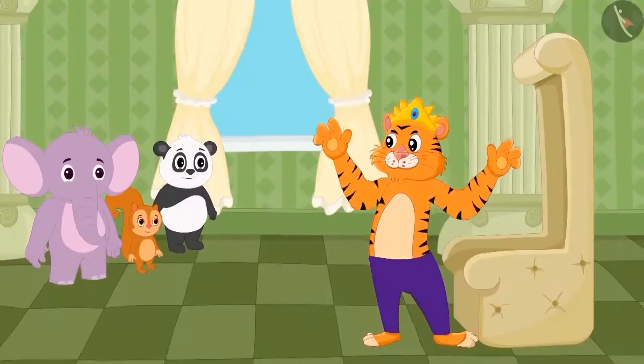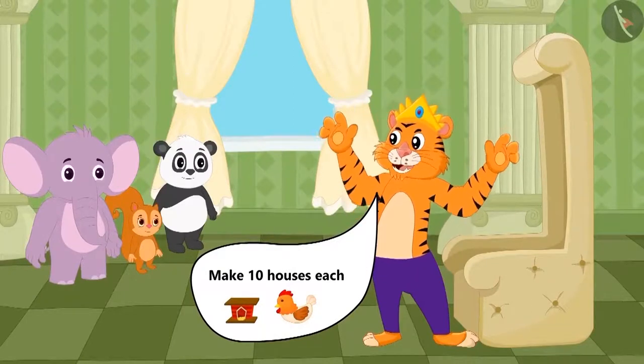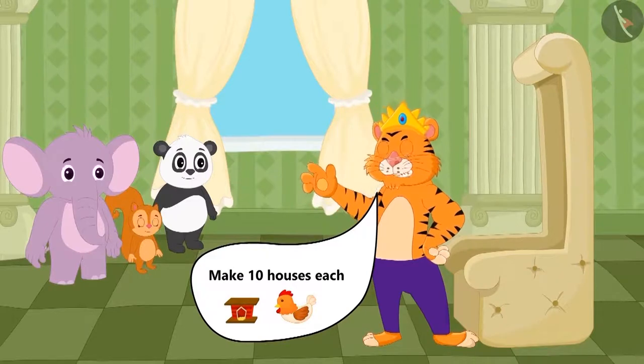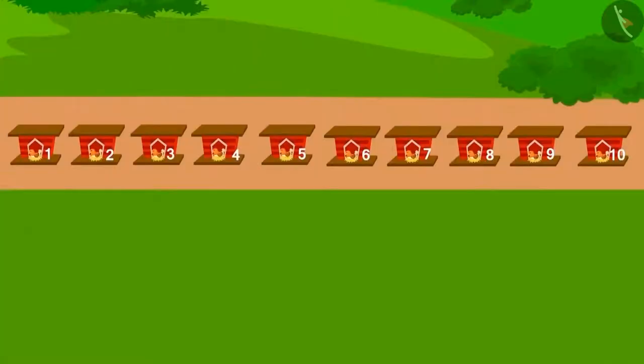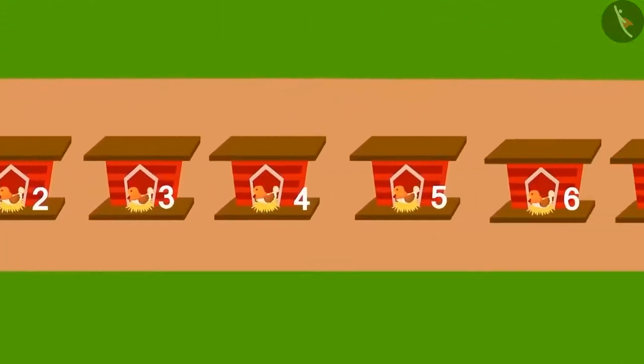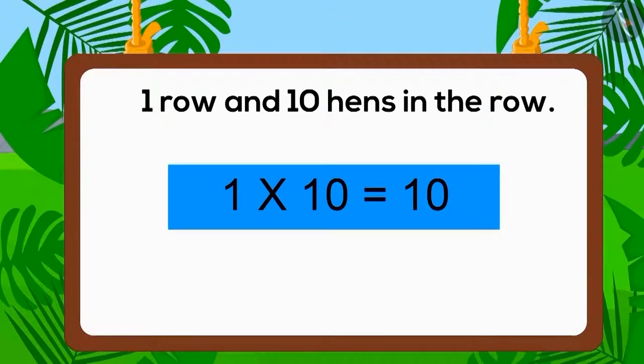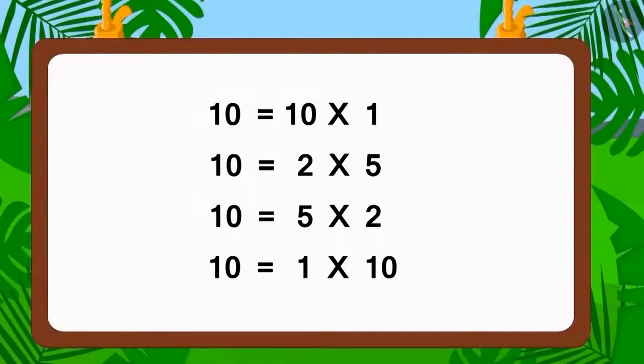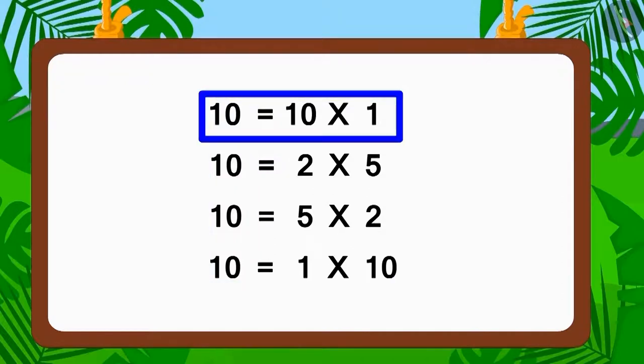Children, as per the conditions stated by the king, can you build the house for hens in any other way? Absolutely right! We can build the house for the hens by placing ten hens in one row as well. Children, if you look closely, then you will find that here we have written ten as four different forms of multiplication.